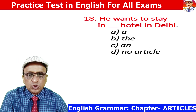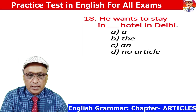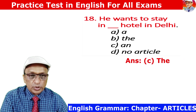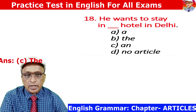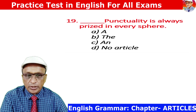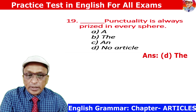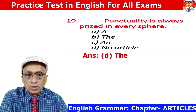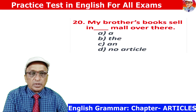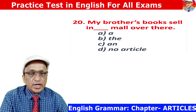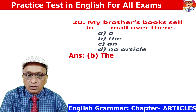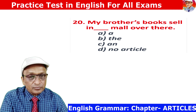Question 18: He wants to stay in a hotel in Delhi. 'Hotel' gives a vowel sound, that is why 'an hotel.' Answer is C. Question 19: Punctuality is always prized. Punctuality is an abstract noun, so no article is to be used. Answer is D. Question 20: My brother's books sell in the mall over there. Mall is particularized, so 'the mall.' Answer is B.